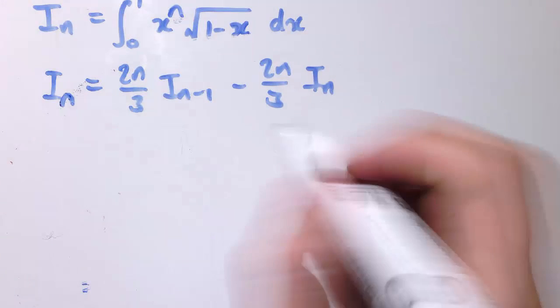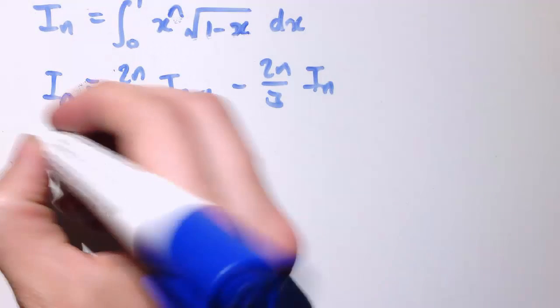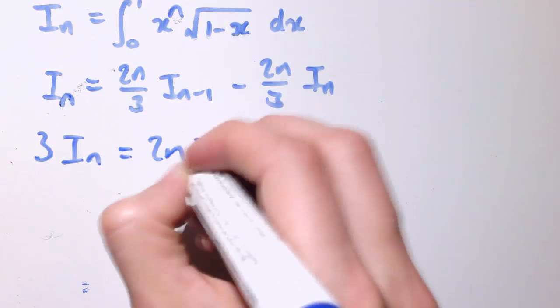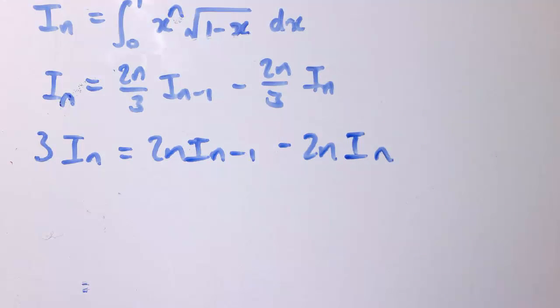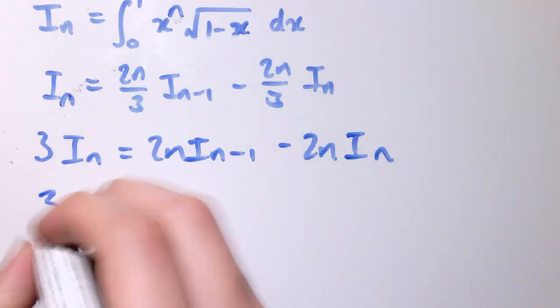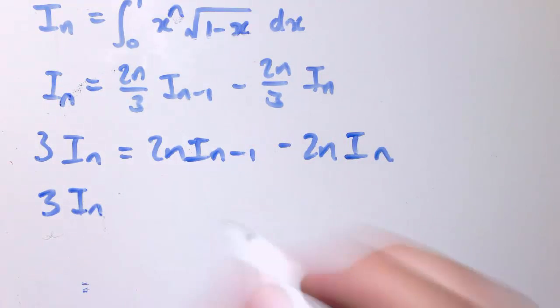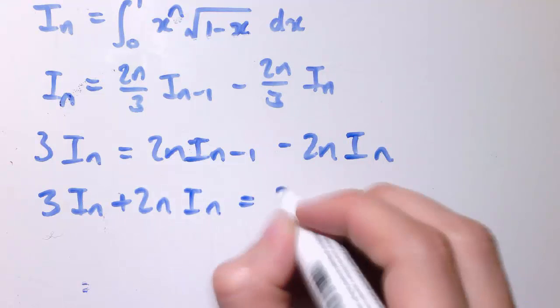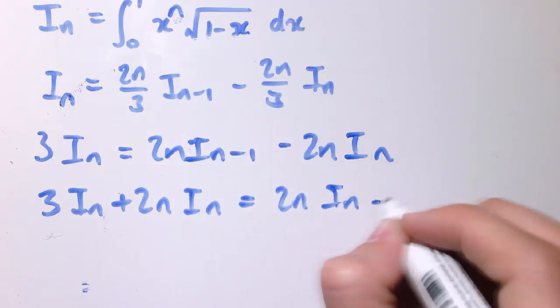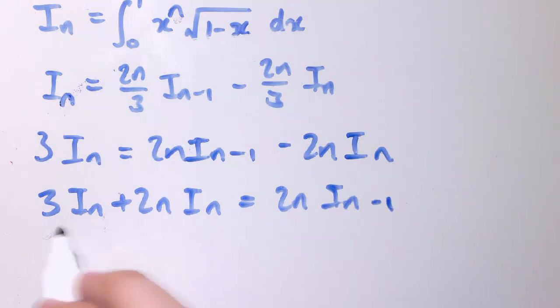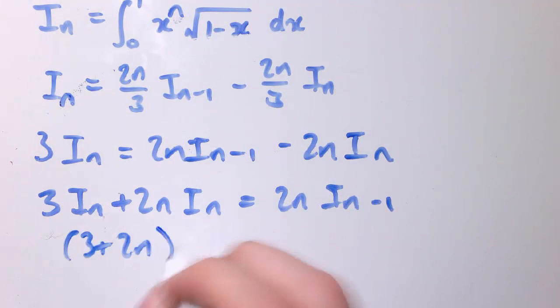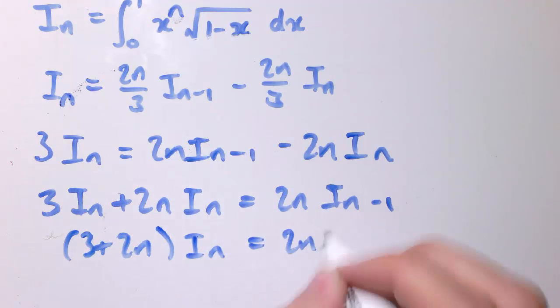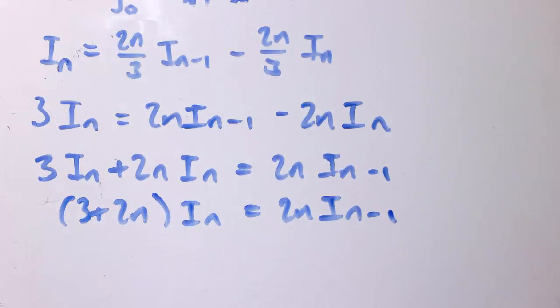So it's just a case of rearranging this for i n. Let's multiply it all by 3 to get 3 i n equals 2n i n minus 1 minus 2n i n. Let's add this term to both sides. So I get 3 i n plus 2n i n equals 2n i n minus 1. So here I've got 3 plus 2n times i n is 2n i n minus 1.